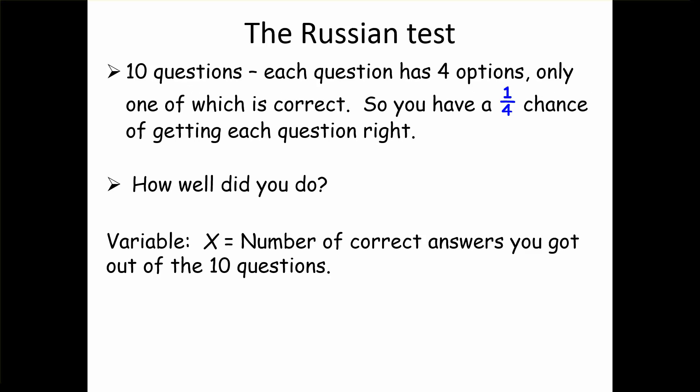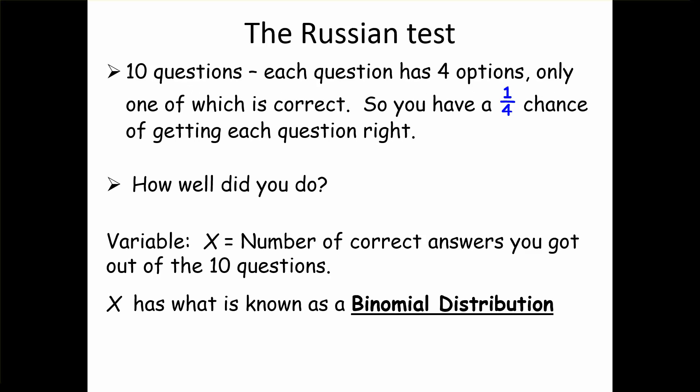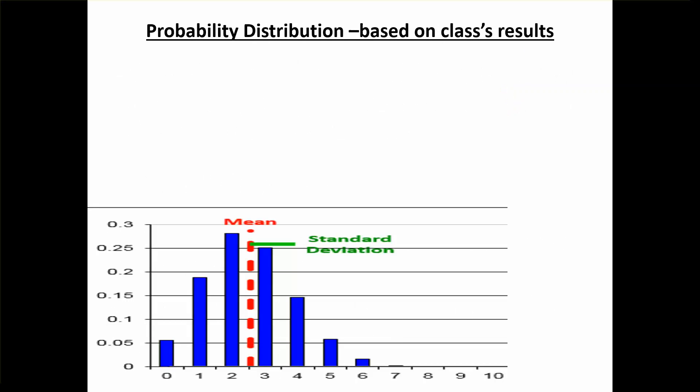The variable x equals the number of questions you got right out of the ten. X is known to have a binomial distribution, and the distribution looks like this because most of us don't speak Russian so most of us sucked at that test. The average or expected number correct was about two or three out of ten. So we're going to look at the question of what's the probability of getting up to two correct.